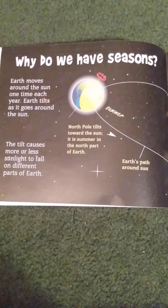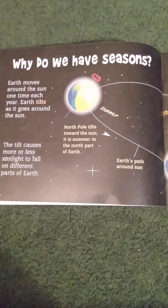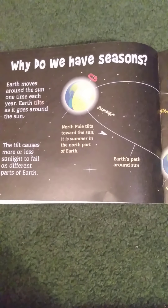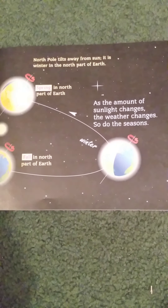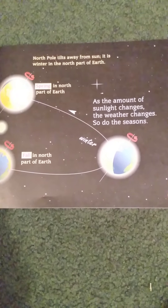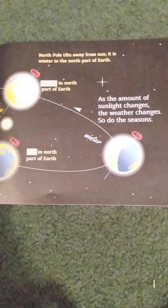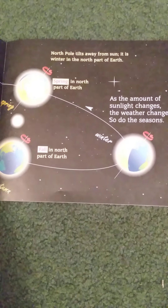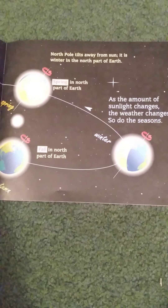Why do we have seasons? The earth moves around the sun one time each year. The earth tilts as it goes around the sun. The tilt causes more or less sunlight to fall on different parts of the earth. When the North Pole tilts towards the sun, it is summer in the north part of the earth. As the amount of sunlight changes, the weather changes, and so do the seasons. When the North Pole is away from the sun, it is winter in the north part of the earth.